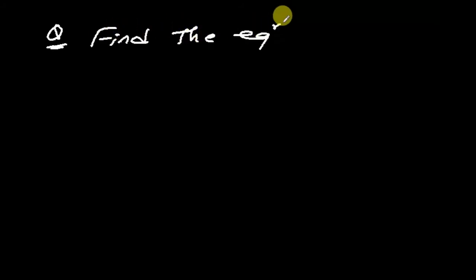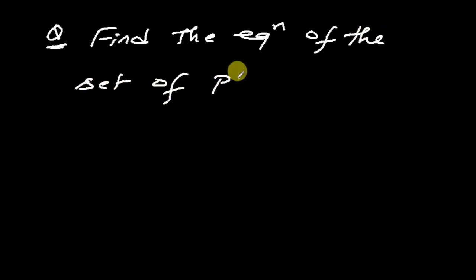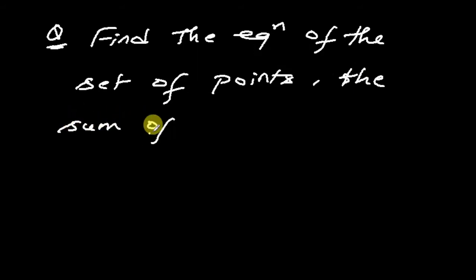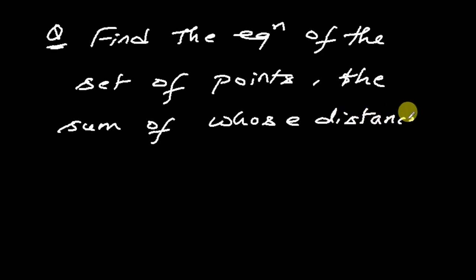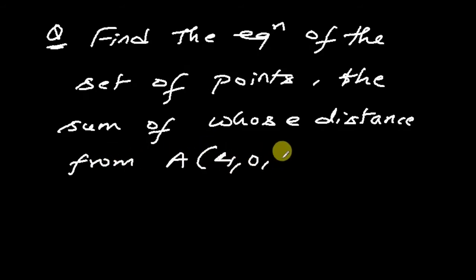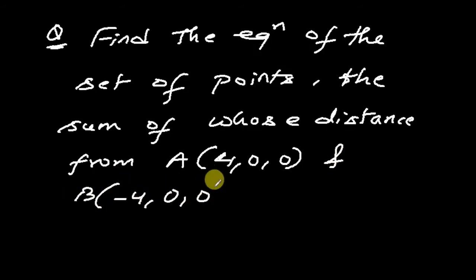Now I am going to find the equation of the set of points the sum of whose distance from A, that is (4, 0, 0), and B, that is (-4, 0, 0), is equal to 10.